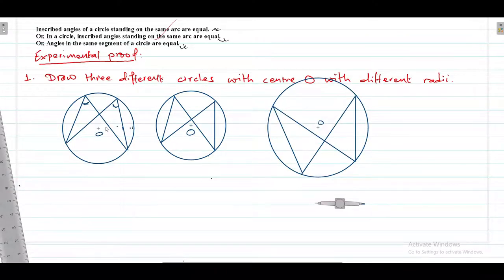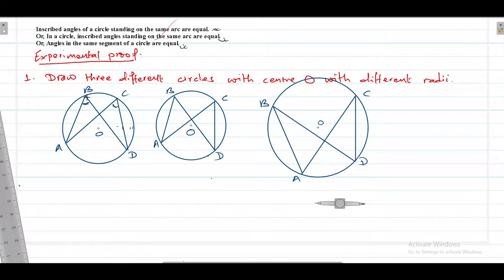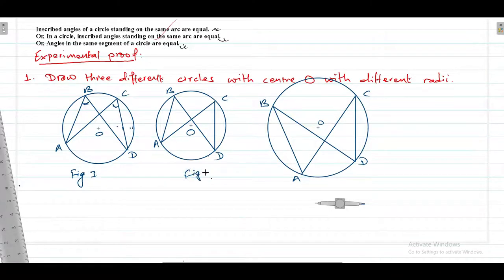Now label these figures. Say the center is O and the points are A, B, C, D for each of the three figures. Here B and C are the inscribed angles and these both inscribed angles are standing on the same arc A, D. Say this is figure one, this is figure two, and this is figure three.